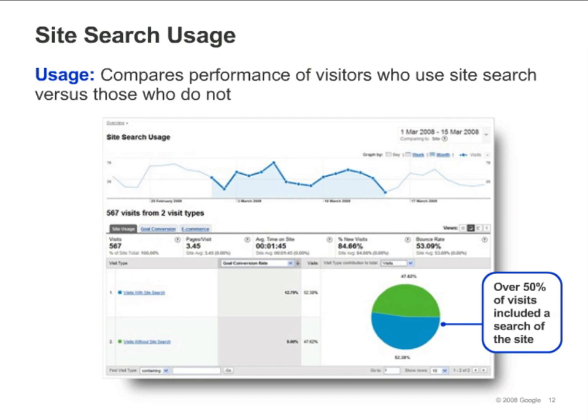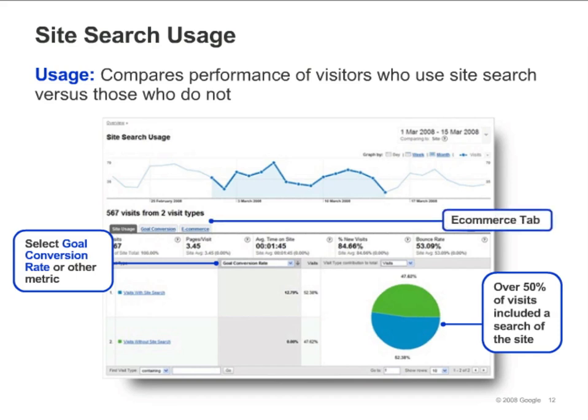Just above the pie chart, you'll notice two drop-down menus. If you select Goal Conversion Rate in the left-most drop-down, you can see how visits that included search compare to visits that did not include search, with respect to conversions. And you can click the eCommerce tab to see how revenue and other eCommerce metrics differ for visits with and without site search.